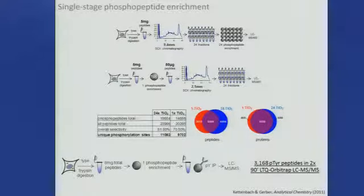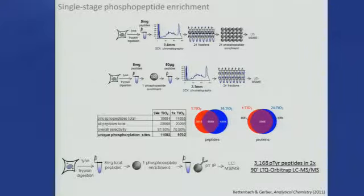Not only does this reduce manual manipulation — replacing 24 enrichment steps with just one — but it's also been very helpful for our immunoprecipitation experiments. In a single one-stage TiO2, we can take a large amount of input, completely solubilize it in compatible buffers, and access a significant number of phosphotyrosine-containing phosphopeptides. This number still stands as one of the largest single analyses of phosphotyrosine peptides from whole cell lysate digests.